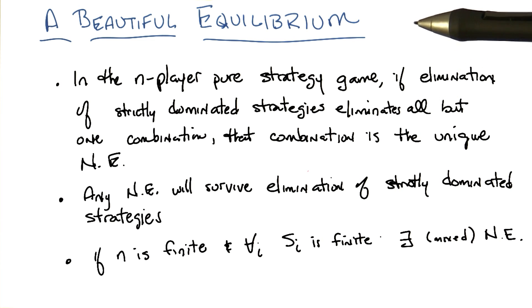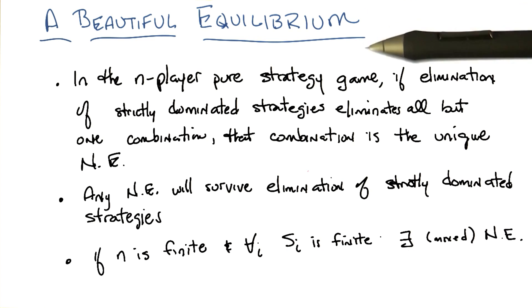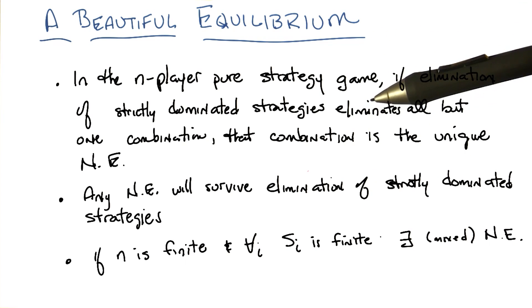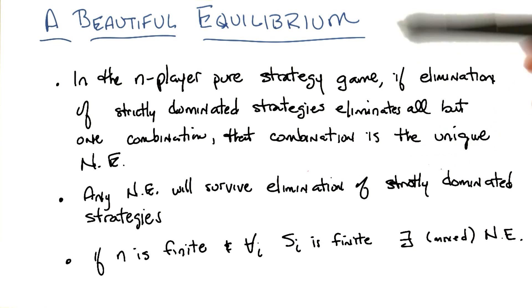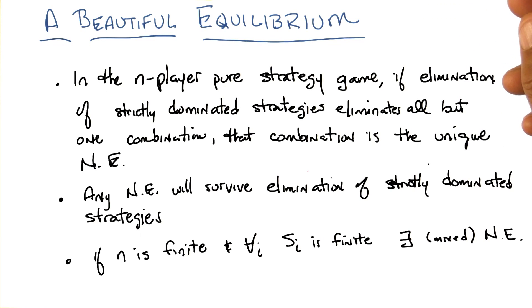The second one is - and both of these I think are kind of obvious, they sort of make sense anyway - any Nash equilibrium will survive the iterated elimination of strictly dominated strategies. In other words, if you get rid of things that are strictly dominated, you will not accidentally get rid of Nash equilibria in the process.